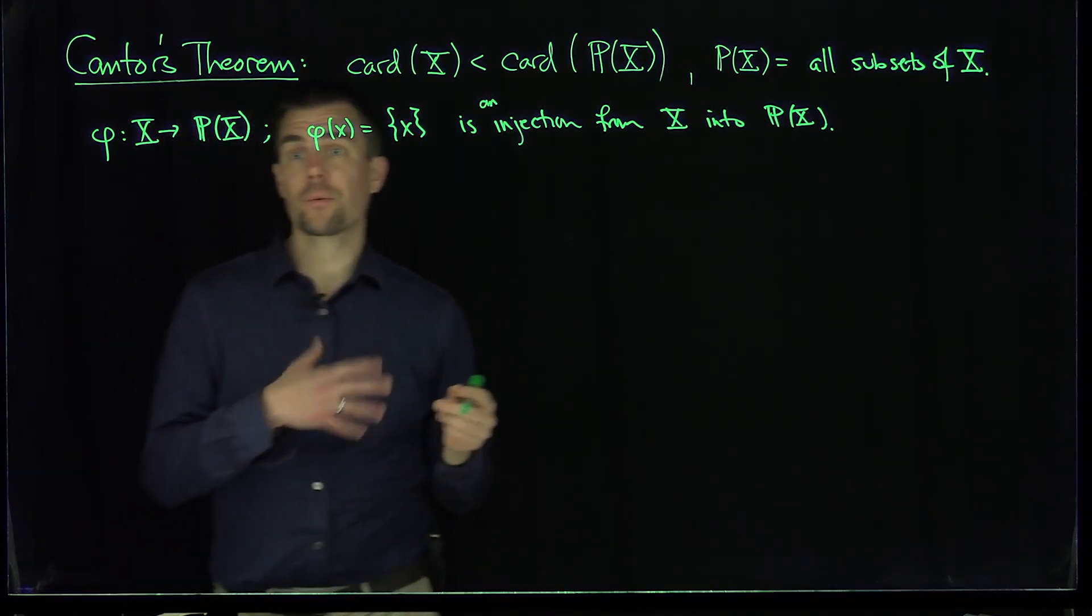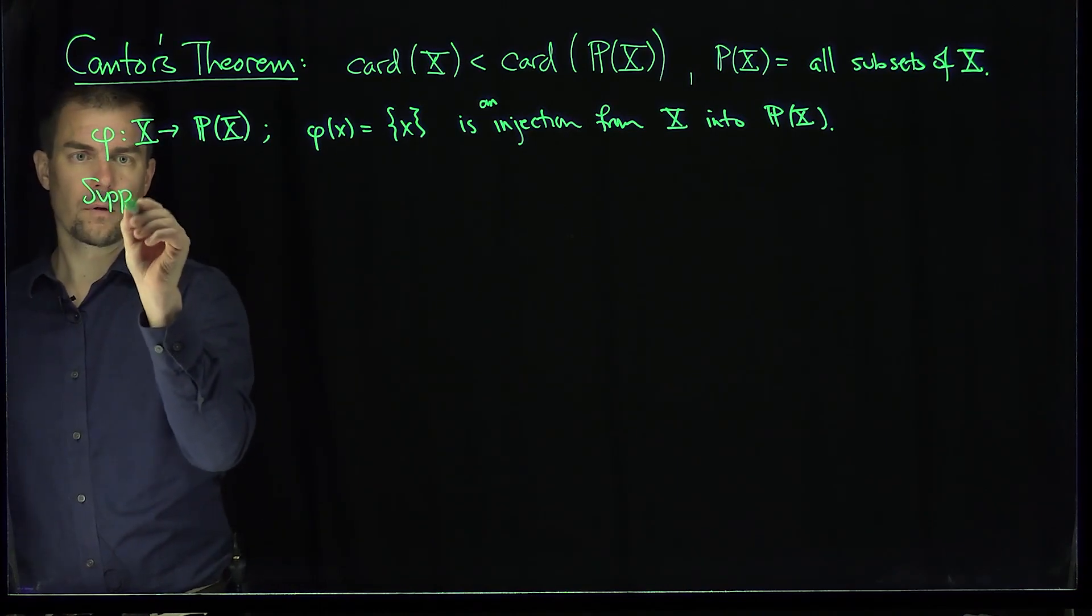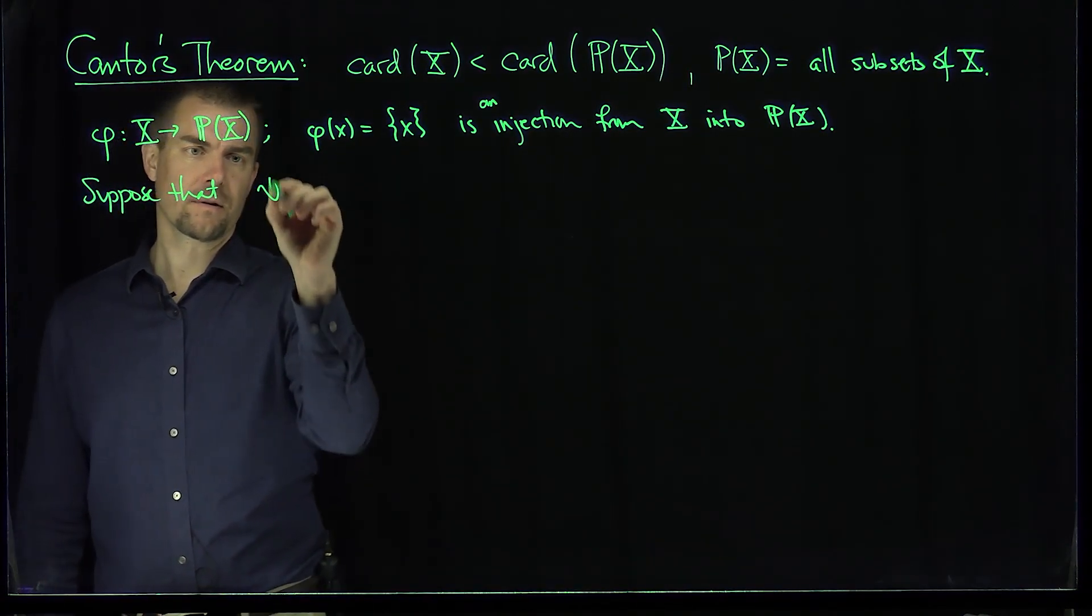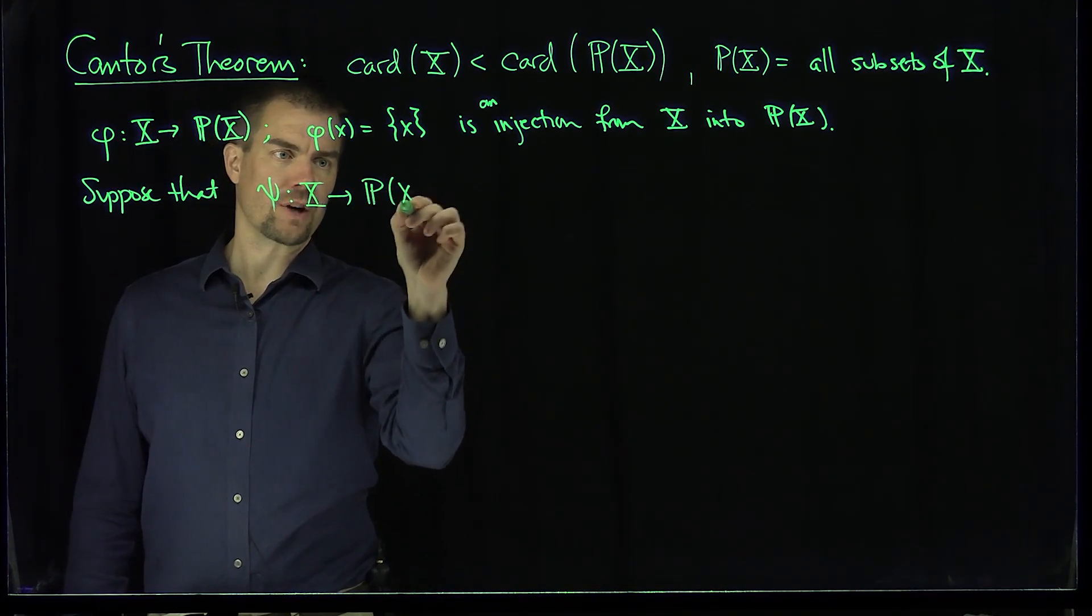Now let's suppose that there was a surjection. Let's suppose that Psi mapping X into the power set of X is a surjection.